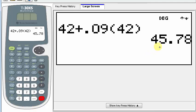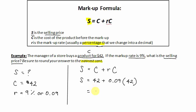And notice that we round to the nearest cent, which is the hundredths place, and it's $45.78. So the selling price is $45.78.